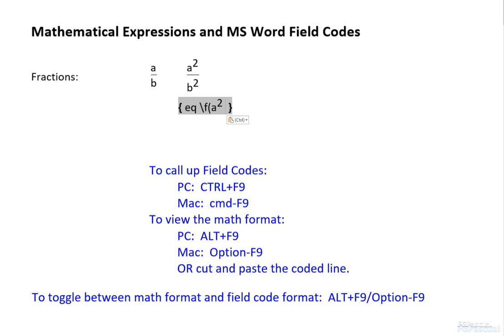Now, the denominator b squared. Type comma to separate the numerator a squared from the denominator. Type b. And since the exponent is exactly the same as that for a squared, we'll just copy the exponent of a squared and paste it after b. Close with a parenthesis. Cut the entire line of code. And paste.